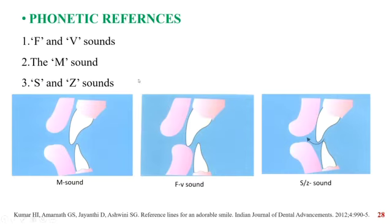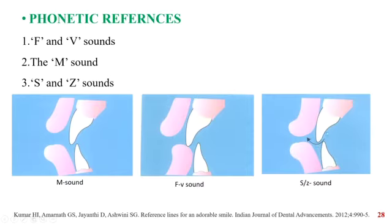Coming on to the phonetic references, we have F and V sounds, M sounds, and S and Z sounds. When pronouncing F and V sounds, the incisal edge of the upper anterior teeth touches the vermilion border of the lower lip. When M sounds are pronounced, the patient is asked to sit in an upright position and pronounce words starting from M; the lips are in a rest position, which helps evaluate the position of the incisal edge at rest. When S and Z sounds are pronounced, it helps in evaluating the closest speaking space.